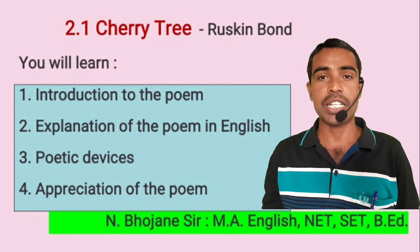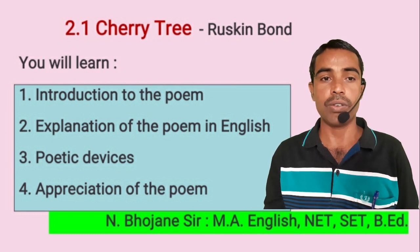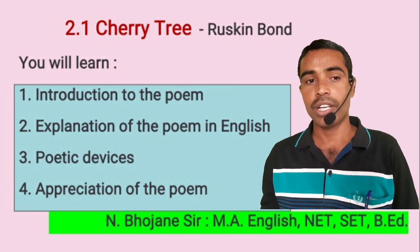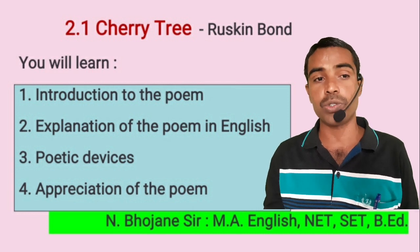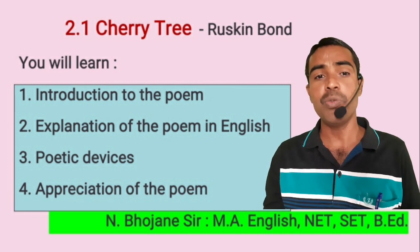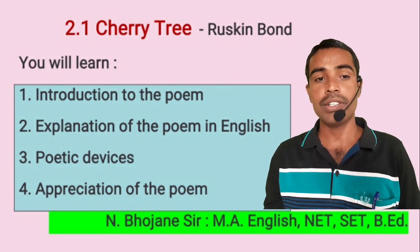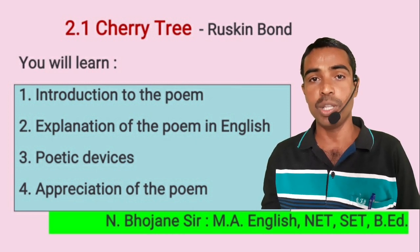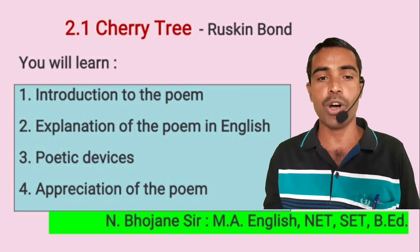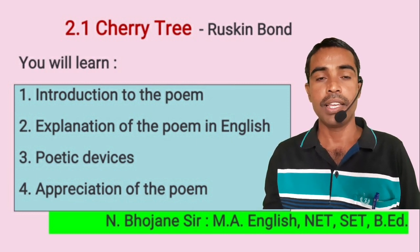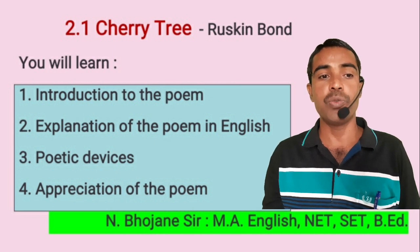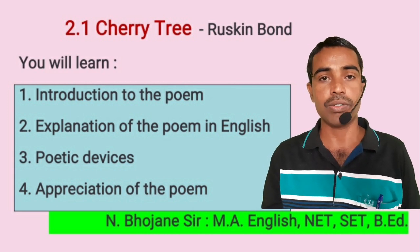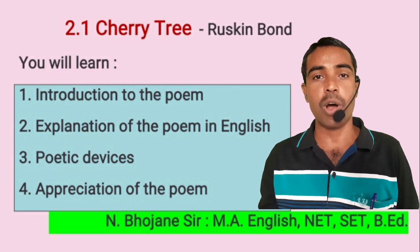The poem Cherry Tree expresses the poet's great joy over a cherry tree which he planted eight years ago. The poet does not take care of the tree. The tree grows without any care. He wonders how the cherry blossoms and gets immense joy by observing his own cherry tree. The poem motivates all the readers for tree plantation. In this short video lecture, you will learn new words from the poem, explanation of the poem in English, poetic devices and appreciation of the poem.